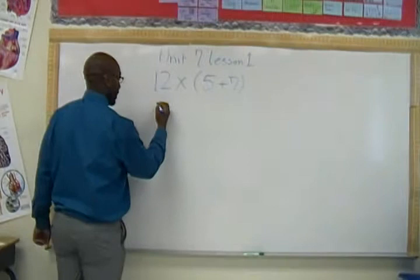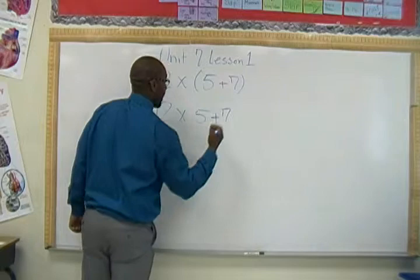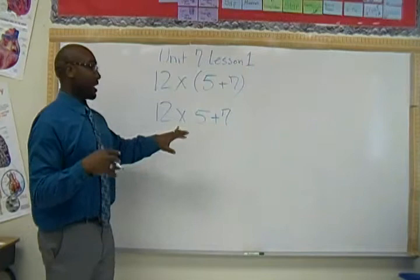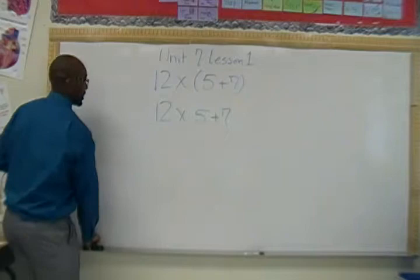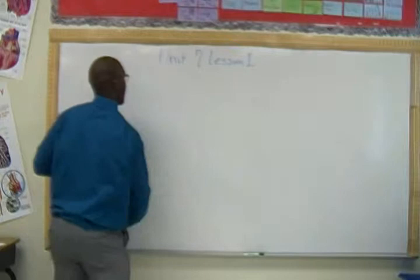Another version we looked at is the same problem without parentheses: 12 times 5 plus 7. In this case, it's not in parentheses, so we need to do multiplication first. So we want to tell people we want to do 12 times 5, plus 7. Just think about different ways to write these in word form.